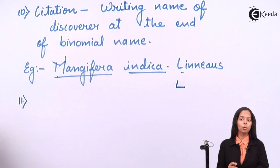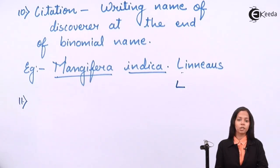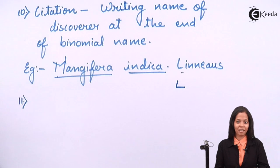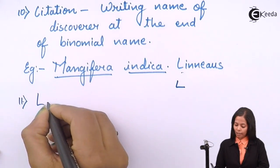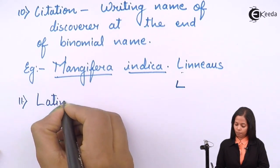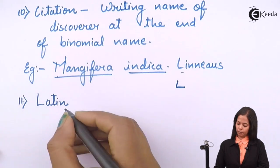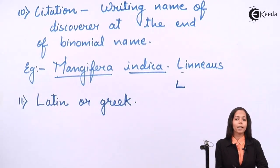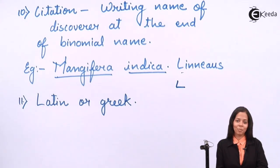The last and most important rule concerns which language is used in binomial nomenclature for giving names. The language used in binomial nomenclature is either Latin or Greek. With this, we have completed the rules of binomial nomenclature. Thank you very much, students.